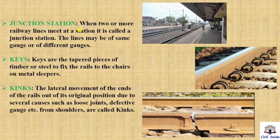Junction station. When two or more railway lines meet at a station, it is called a junction station. These lines may be of the same gauge or of different gauges.